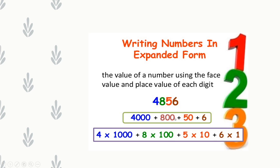Next, how to write a given number in expanded form. To write a number in expanded form, we write the value of each digit using its face value and place value. For example, 4856: 4 is in the thousands place, so 4000; plus 8 is in the hundreds place, so 800; plus 5 is in the tens place, so 50; plus 6 is in the ones place, so 6. We can also write it as 4 into 1000, plus 8 into 100, plus 5 into 10, plus 6 into 1.